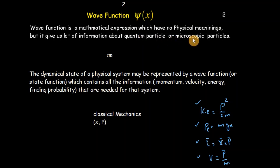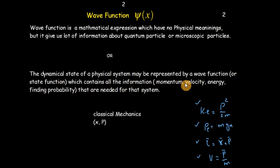Similarly, if we have a quantum particle — a microscopic particle like an electron, proton, or neutron — if we can express this particle in terms of the wave function psi, then all information related to the particle like momentum, velocity, and energy can be obtained. So in classical mechanics, position and momentum play the key role, whereas in quantum mechanics, the wave function plays that role.